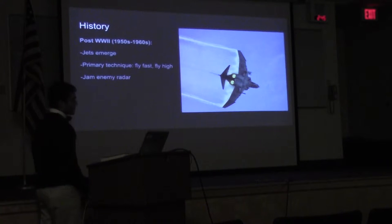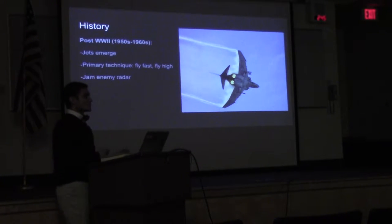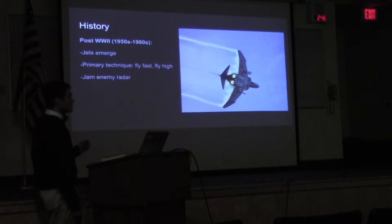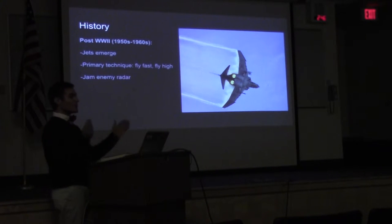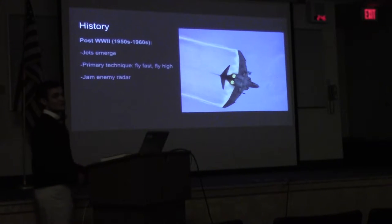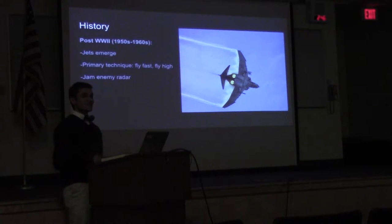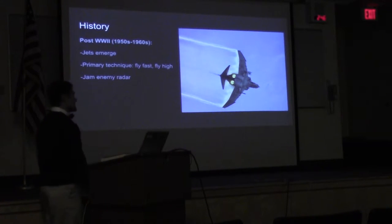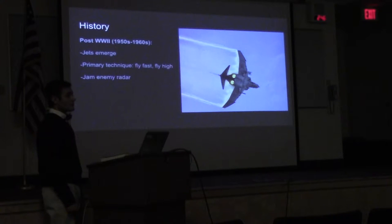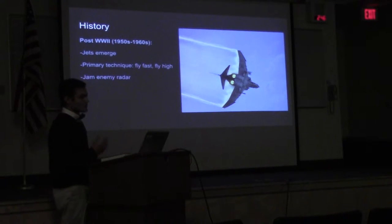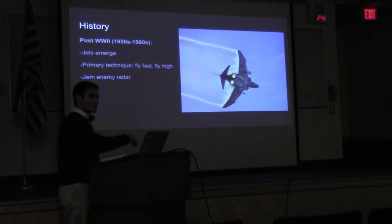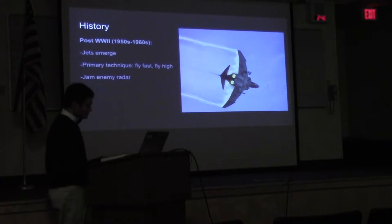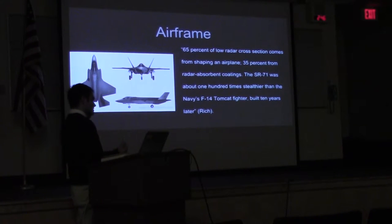As we come out of the 1940s and into the 1950s, jets started to emerge. In World War II the main propulsion system was propellers, but now we have jets — they're faster, bigger, and better. Radar systems were starting to have longer ranges. The main way we avoided radar was to fly fast and fly high to avoid it. We also jammed enemy radar, which is simply like hacking it in order to take it offline for a minute — go in, do what you need to do, and get out.